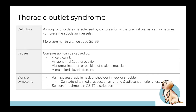Thoracic outlet syndrome is an overarching term for conditions involving compression of neurovascular structures — such as the brachial plexus or subclavian artery or vein — as they pass from the lower neck to the armpit. Causes include trauma, tumors, or the presence of a cervical rib, which is an extra rib arising from the seventh cervical vertebra in some people. Usually asymptomatic, it can compress the lower trunk of the brachial plexus (C8 and T1 roots) or the subclavian vessels, leading to thoracic outlet syndrome.